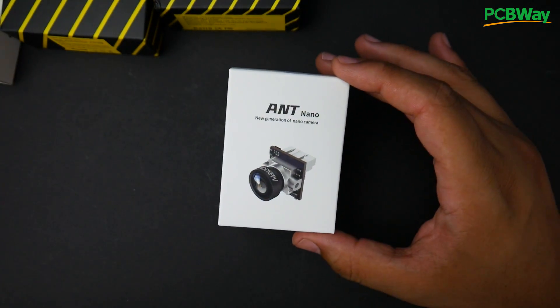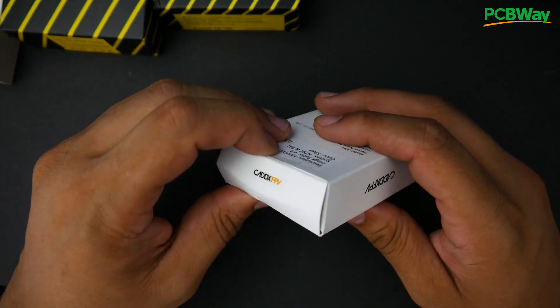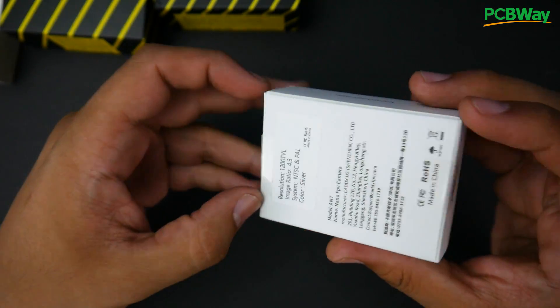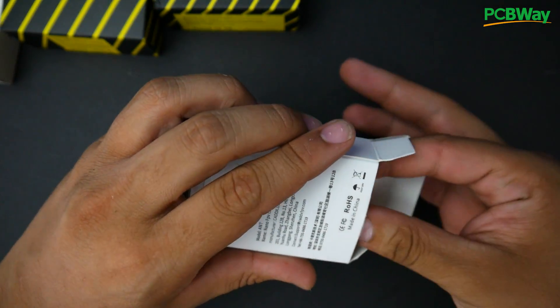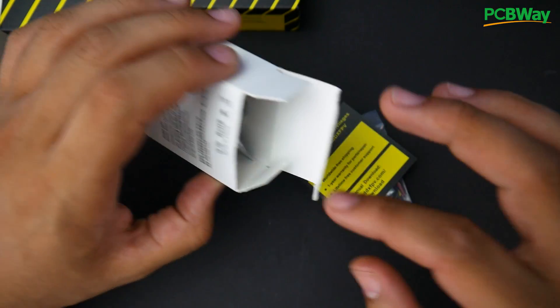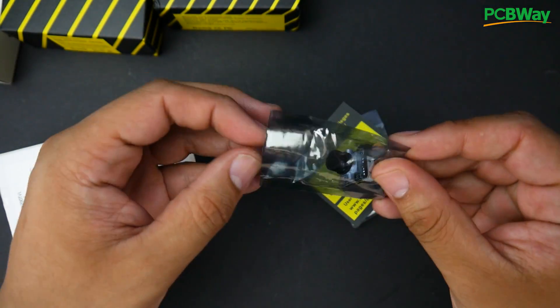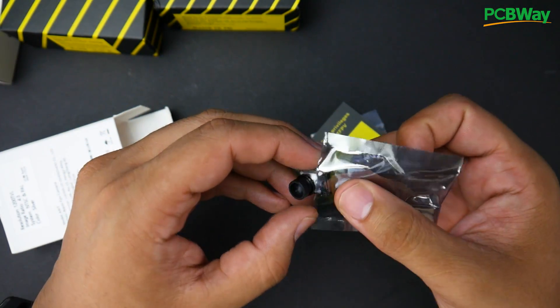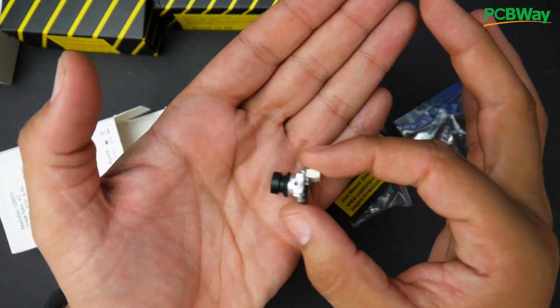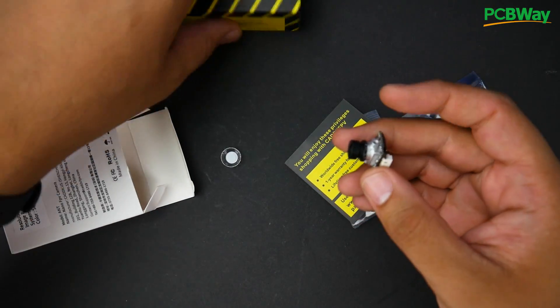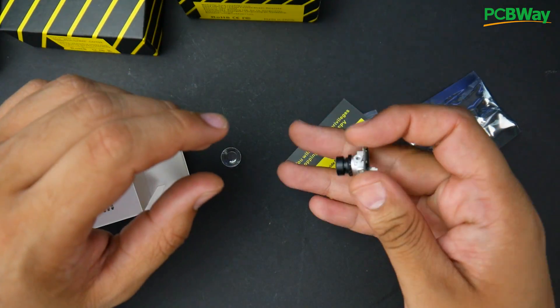So the first one we're going to take a look at is the Ant Micro. This is by far one of the tiniest cameras I have ever seen, period. It is unbelievably light, unbelievably tiny and the latency is actually quite good here. So let's go ahead and take a look at it. It's so freaking tiny. Look at this. It's really small. I don't know how to compare it to something. We'll compare it against the mini in a bit here.